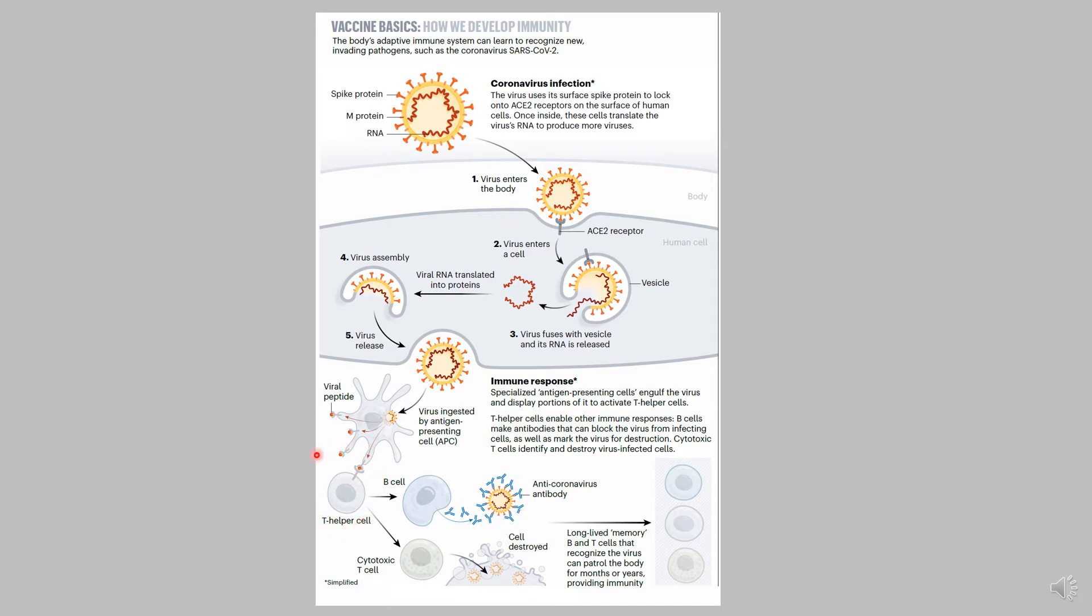These HLA molecules that present the viral peptides attract different kinds of cells. One type is a T helper cell, which then gets activated and activates B cells, and these B cells secrete antibodies. The antibodies can bind an infectious virus and eliminate it from the body.